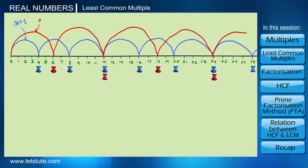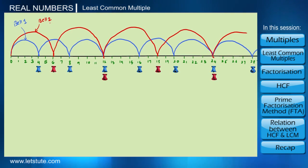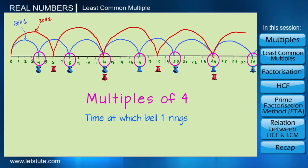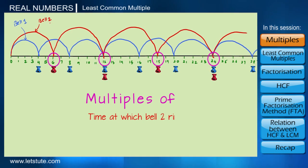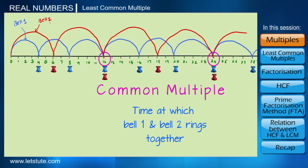From this diagram we can see that Bell 1 and Bell 2 both meet at the 12th minute, meaning they will both ring together first at the 12th minute, then the 24th minute, and so on. In mathematical terms, 4, 8, 12, 16 are all called multiples of 4, and similarly 6, 12, 18, 24 are all multiples of 6.